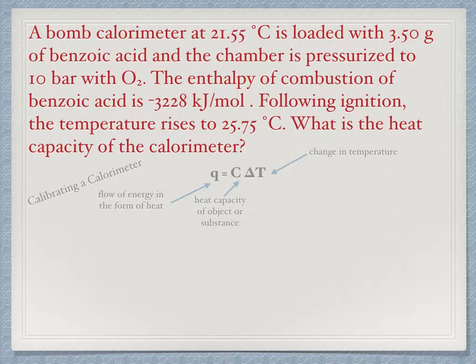A calorimeter is calibrated by combusting a substance with a known enthalpy of combustion. This allows us to calculate the expected energy that will be released and which will flow into the calorimeter. We will measure the change in temperature and we can, from that, determine the calorimeter's heat capacity.